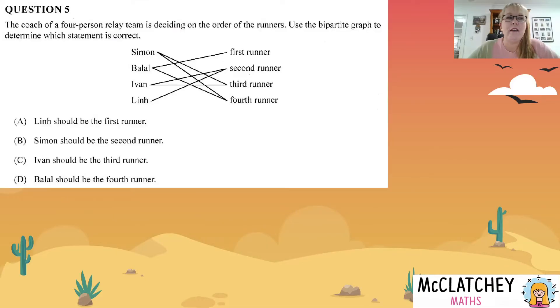So here's question five. The coach of a four person relay team is deciding on the order of the runners. Use the bipartite graph to determine which statement is correct. Now looks like there's a lot going on. We could actually just ignore the options there and do an optimal allocation. We'll skip that step and we'll just look at each question or each response and see which ones we can eliminate. At the end of the question, we'll actually go the other road and draw the optimal allocation, which is an alternate way to get to the answer.